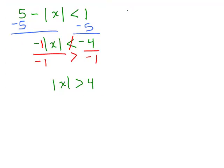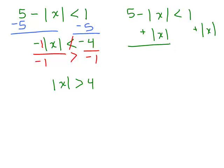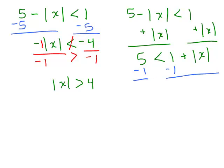Somebody else might do it this way: 5 minus absolute value of X is less than 1. They say, I don't want to have a minus in front of the absolute value, so I'm going to add the absolute value of X to both sides. That way it's on the right-hand side but at least it's positive. So on the left-hand side all I have is 5, less than 1 plus absolute value of X. Then subtract 1 from both sides to get 4 is less than the absolute value of X.